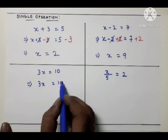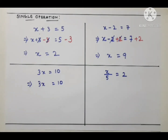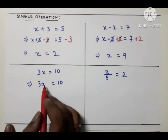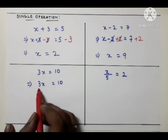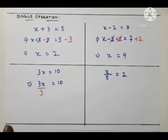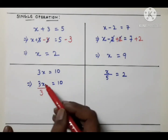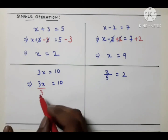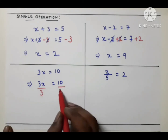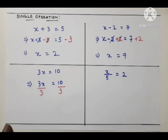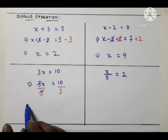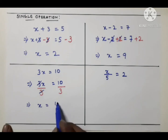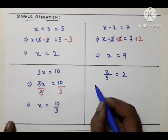Next equation: 3x = 10. Write down the equation. Here 3 is multiplied with x (3x means 3 × x). To remove 3, we use the inverse: divide by 3. Since we divided by 3 on the left, we divide by 3 on the right also. The 3s cancel, and we get x = 10/3 as the solution.